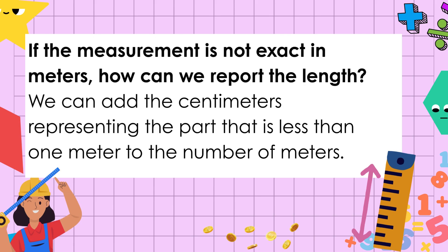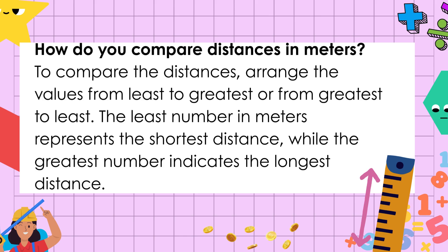If the measurement is not exact in meters, how can we report the length? We can add the centimeters representing the part that is less than one meter to the number of meters. To compare the distances, arrange the values from least to greatest or from greatest to least. The least number in meters represents the shortest distance, while the greatest number indicates the longest distance.